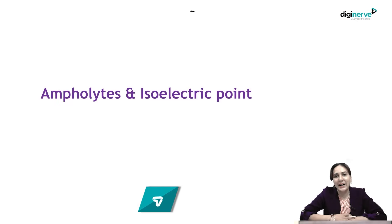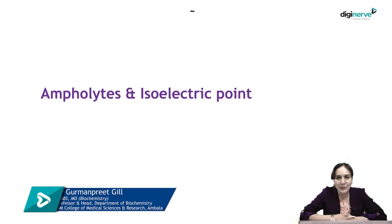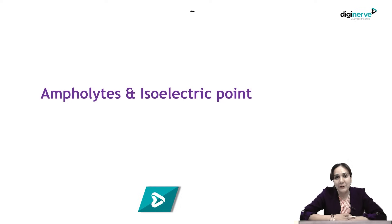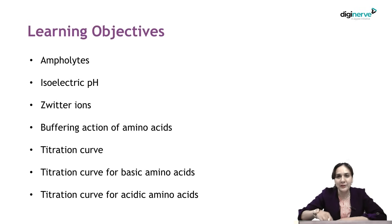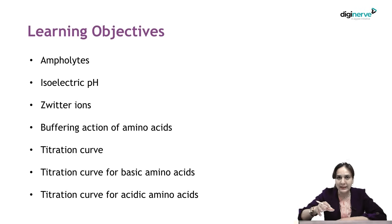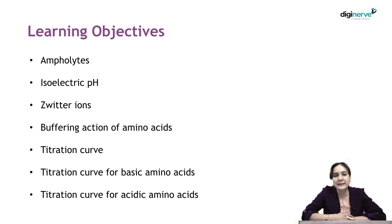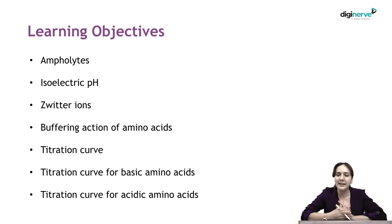Greetings students, welcome back to the topic of protein chemistry. In this lecture I will be discussing ampholytes and isoelectric points. The learning objectives will be: why amino acids are known as ampholytes, what is isoelectric pH, what are zwitterions, and we will discuss the buffering action of amino acids along with the titration curve for both acidic and basic amino acids.